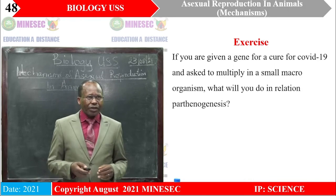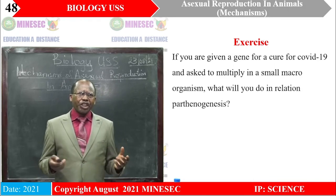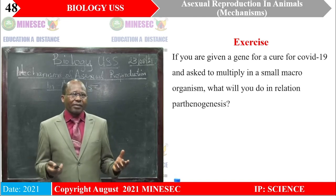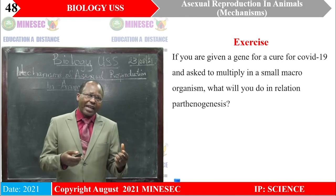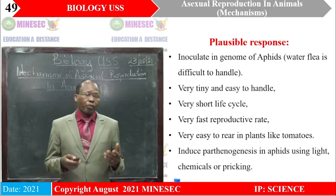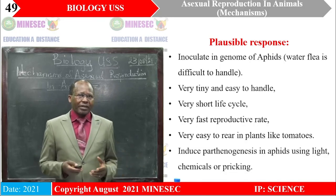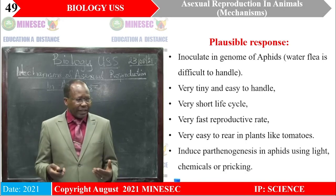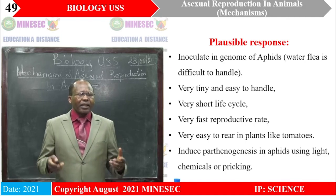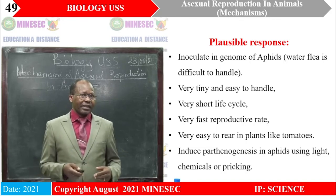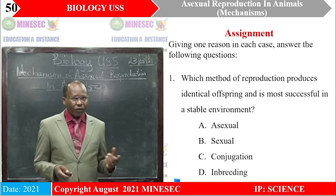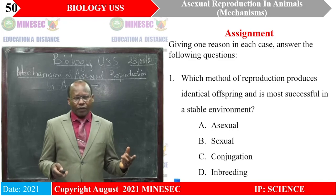Here is a short exercise to review our understanding. If you were given a gene told to be a cure for COVID-19 and asked to multiply it in a small multicellular organism — small but made of many cells — what would you do in relation to parthenogenesis? A plausible response would be: you could inoculate the gene into aphids, since aphids multiply faster and are also tiny. Within a very short time, covering their life cycle, they would have reproduced many aphids by parthenogenesis. As the young ones are in large numbers, you would then extract that gene and use it in the production of your drug. That is how parthenogenesis could be applied.